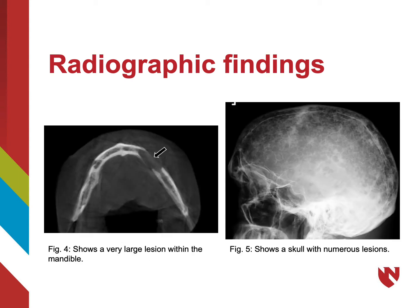Figure 4 is a CBCT which shows a mandible with a very large lesion that has perforated both the buccal and lingual cortical plate. Figure 5 shows a skull with numerous lytic lesions. Sometimes a skull with so many diffuse lytic lesions is called a pepper pot skull. In 40% of patients the skull is affected. Radiographs are advantageous for multiple myeloma because they are better for detecting cortical bone lesions.